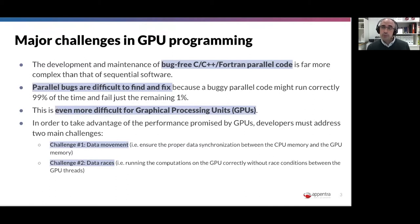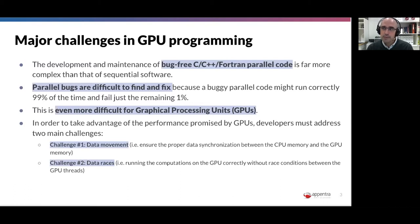If this is complicated for multi-core CPUs where you can use powerful debuggers to track errors, it is even more difficult for GPUs where there are no such advanced tools to debug, find, and fix bugs in code running in parallel on the GPU, because the architecture of the GPU is completely different from the CPU. This makes it much more complicated to develop powerful debuggers for that.